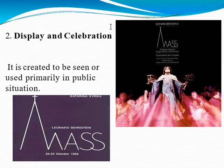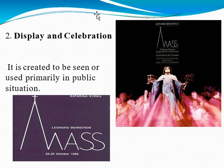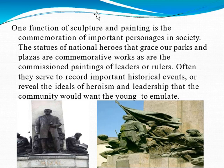The second social function of art is that it displays celebration — it is created to be seen or used primarily in public situations. A good example is the patron, where art pieces are religious in nature or signify certain celebrations. It moves or influences group social behavior, serving as a symbol of a mass collection of group behavior. One function of sculpture and painting is the commemoration of important personages in society. Statues of national heroes that grace our parks and plazas are commemorative works, as are commissioned paintings of leaders or rulers. They often serve to record important historical events or reveal the ideals of heroism and leadership that the community would want the young to emulate.